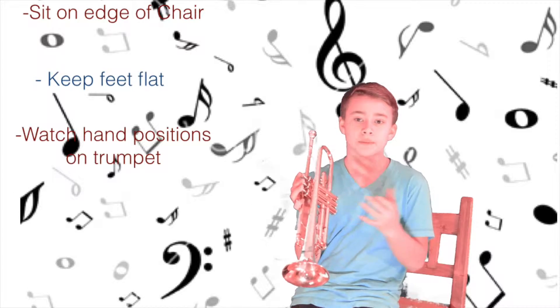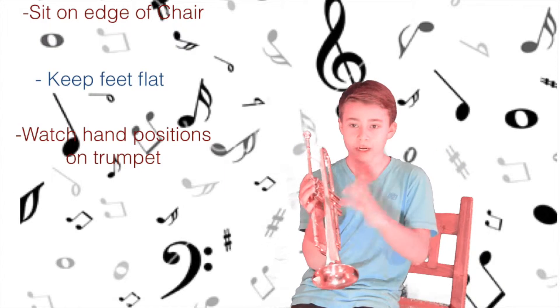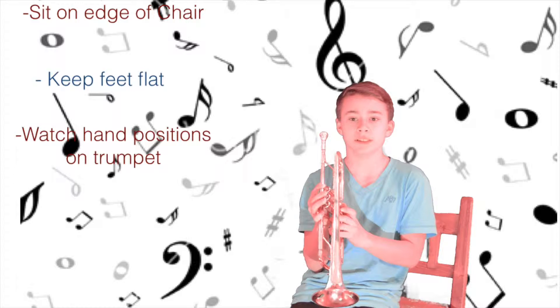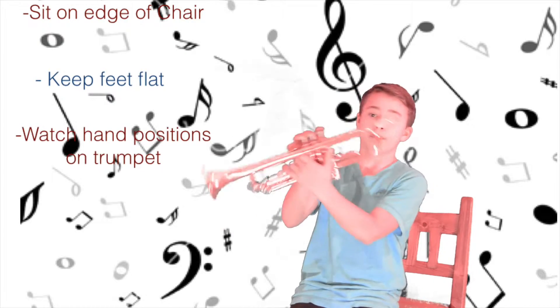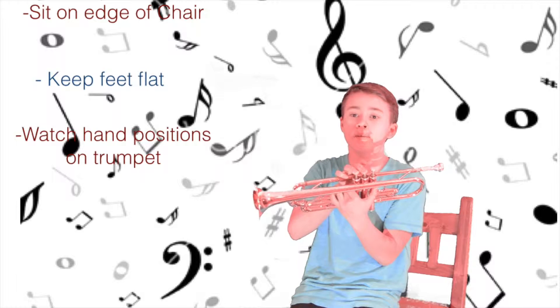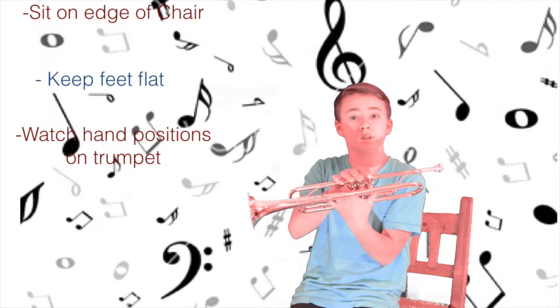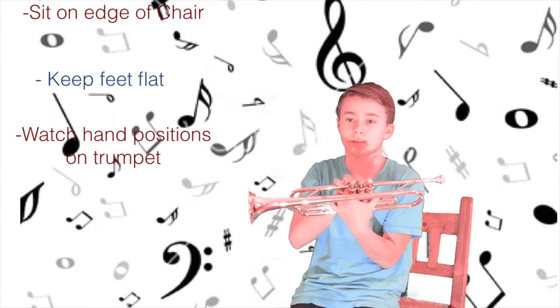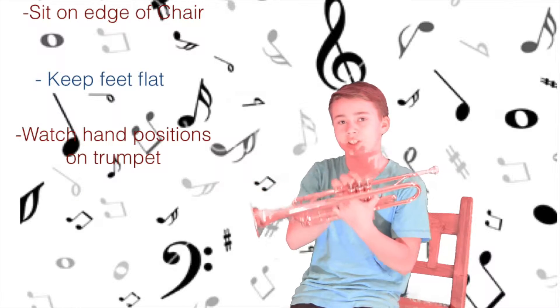After you have your right hand in place, place your left hand ring finger in the ring with your pinky beside it but not in the ring. Your middle and pointer fingers of your left hand will go on top of each other between the valve and the ring. Put your left thumb in the first valve saddle to help you grip the instrument. This is your playing position.